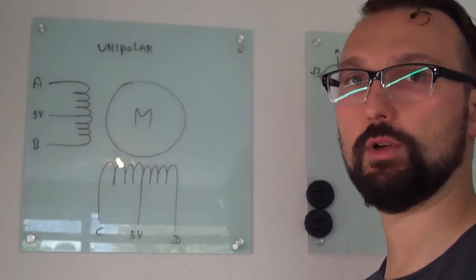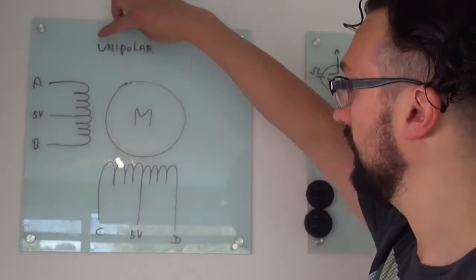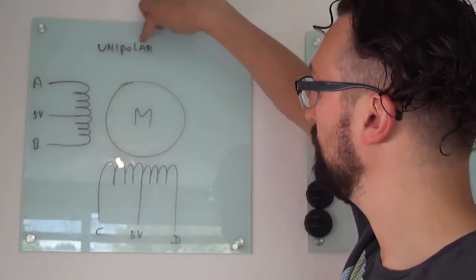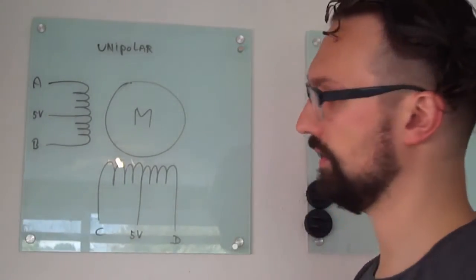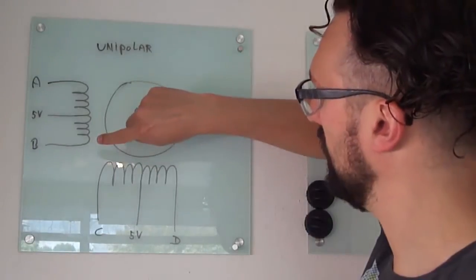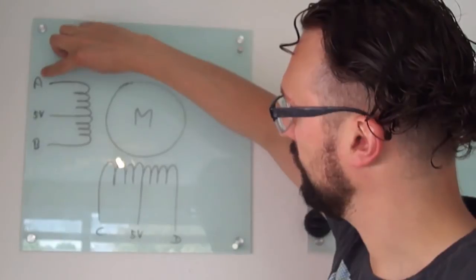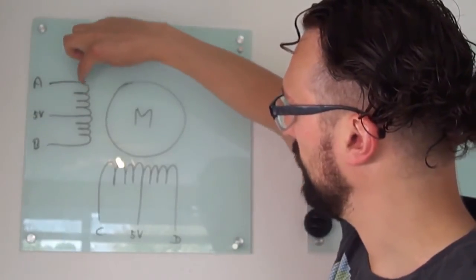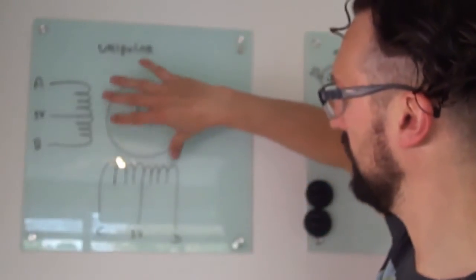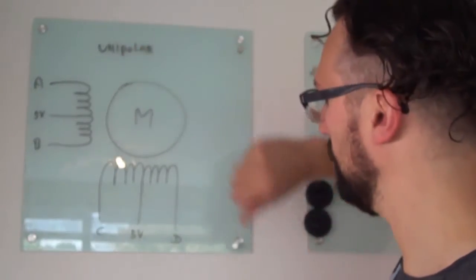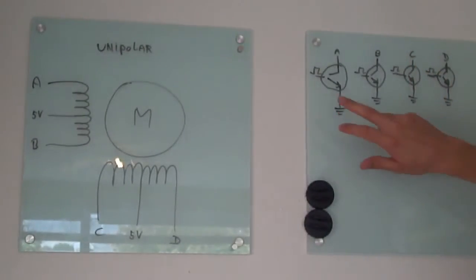This is what's inside the motors that I ordered, at least that's what I thought. I thought I ordered unipolar stepper motors, which work like this: you have 5 volts in the center, which is the common. Then you have an A and a B lead. If you ground this one, the current goes that way. If you ground this one, the current goes this way. And the same for the other side. The magnetic field changes and you can rotate the thing.